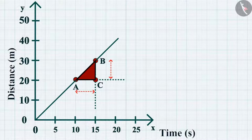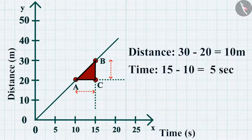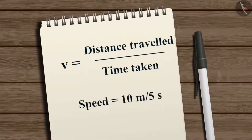From the graph, as the object moves from A to B, it covers a distance of 30 minus 20, equal to 10 meters, in a time of 15 minus 10, equal to 5 seconds. The speed V equals distance traveled divided by time taken: 10 meters divided by 5 seconds equals 2 meters per second.